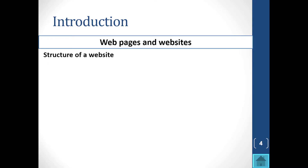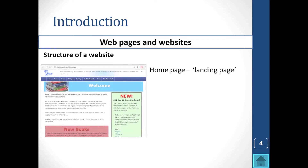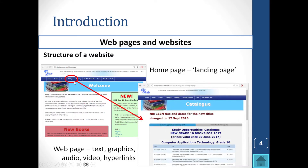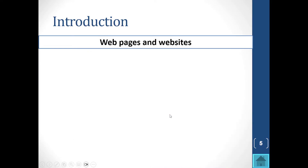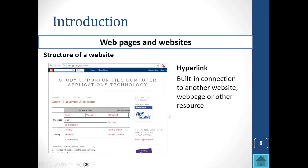Websites usually belong to companies or organizations. When we look at the structure of a website, most must have a landing page — this is the first page you see when you type in a particular website address. From there, individual web pages within the site can have text, graphics, audio, video, and hyperlinks.